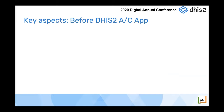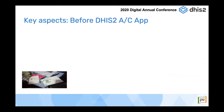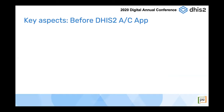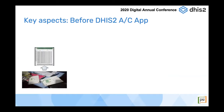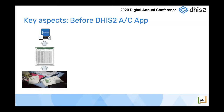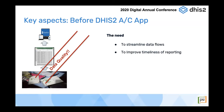Before the DHIS2 data capture apps, client mobilization reports were recorded on paper-based forms, which were compiled into regional spreadsheets and uploaded into shared online files. This approach presented several challenges, and despite many attempts to improve timeliness and quality standards, data quality remained a huge challenge. The A360 core team wanted to streamline their data flows to improve timeliness of reporting and benefit from more advanced analytics and data visualization in DHIS2.